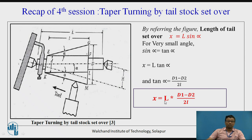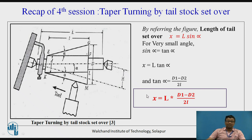The formula is: x = l × (d1 − d2) / 2l, where (d1 − d2) / 2l = tan α. Capital L is the total length of the workpiece, and x is the length of the tailstock setover.